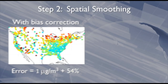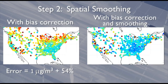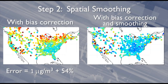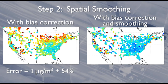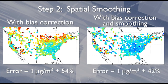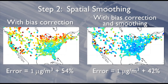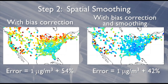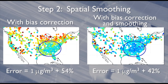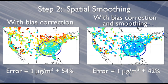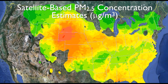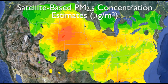Second, spatial smoothing was applied to reduce random errors in the satellite-derived PM2.5 values. This smoothing further reduced the average error to 1 microgram per cubic meter plus 42%. Notice the improvement over the bias-corrected satellite estimates, especially in the eastern US. Reducing average error is critical to producing an accurate satellite product.